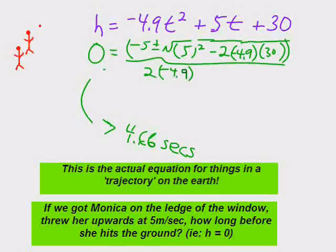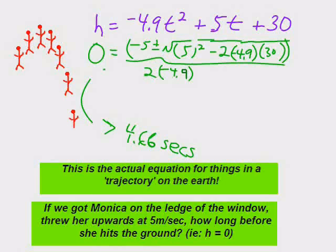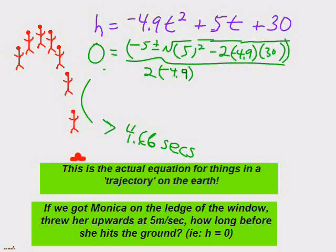It ends up being about 4.5 seconds. That's why we do the quadratic formula, to find out when things are zero. Because normally when you hit the ground, it becomes kind of important. And we didn't calculate the negative time before she jumped, because we're only interested in the positive time after she jumped.